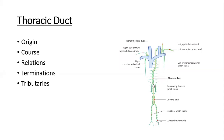The esophagus lies anterior to the thoracic duct in the lower part of the thoracic cavity. Posteriorly, the thoracic duct is related to the vertebral bodies, specifically below the 7th thoracic vertebra.